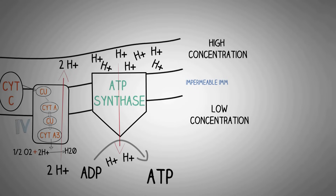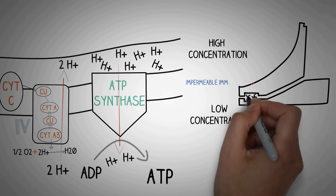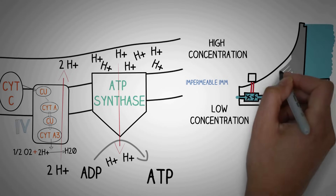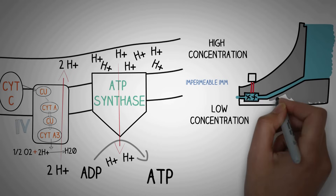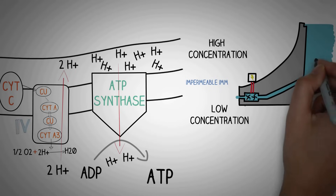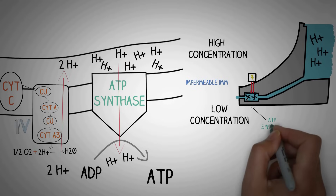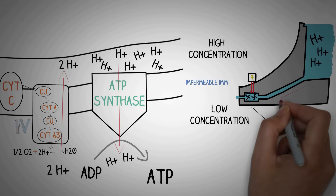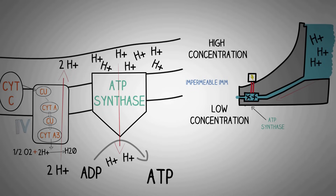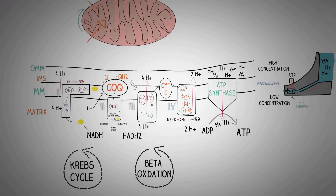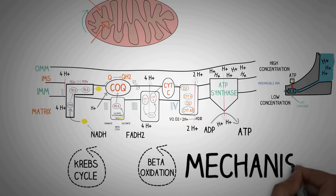The working of ATP synthase can be compared to a hydroelectric power project. The water collected behind the dam can be compared to the hydrogen ions at higher concentration in the inter membrane space. The turbines of the dam can be compared to the enzyme ATP synthase. When water flows from height — analogous to hydrogen ions flowing from higher to lower gradient — it causes the spinning of turbines, comparable to the functioning of ATP synthase, generating power just as ATP synthase generates adenosine triphosphate.